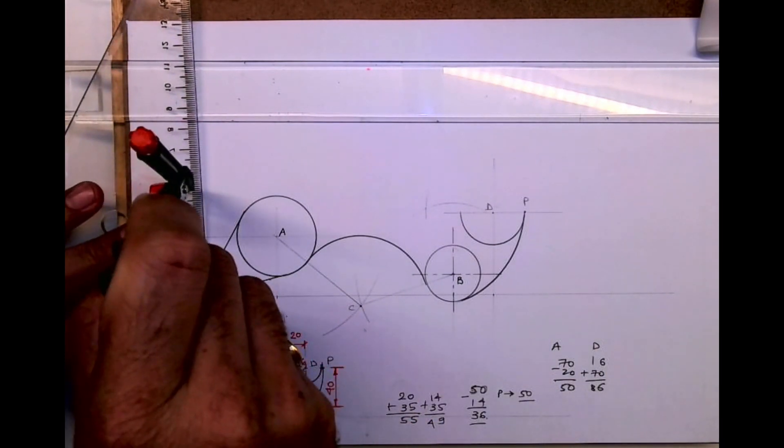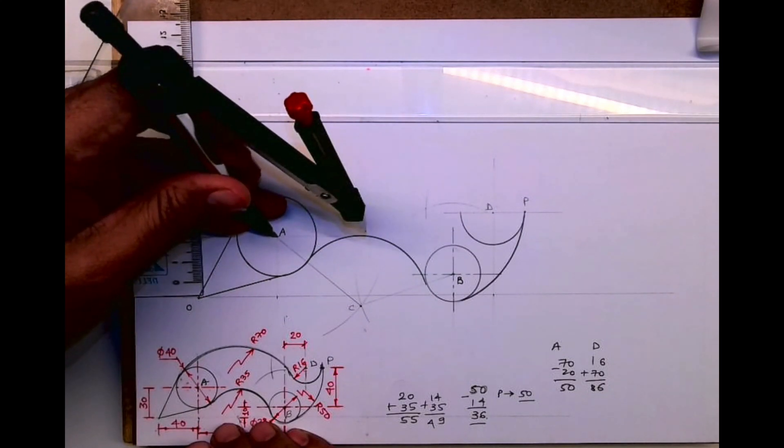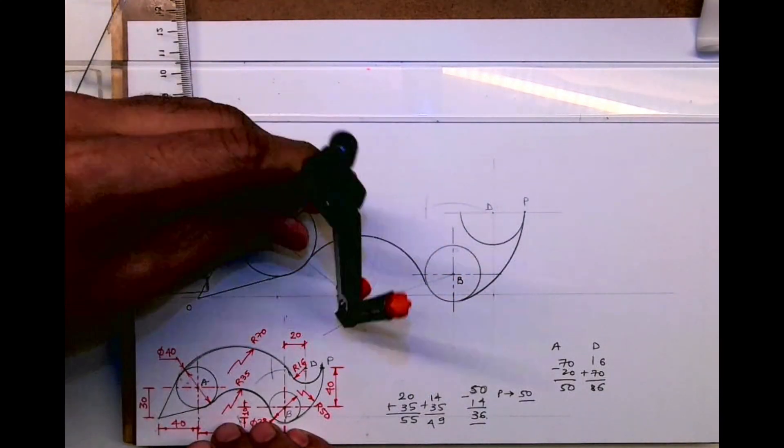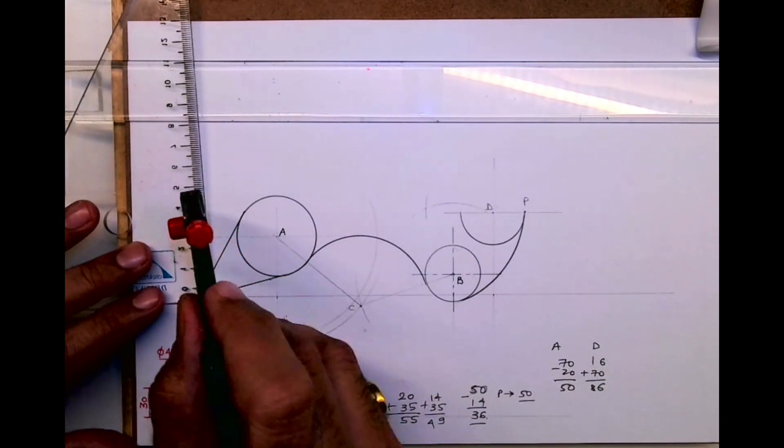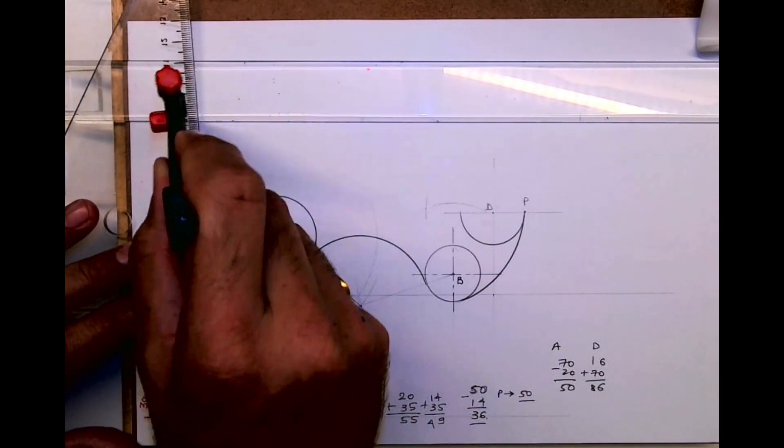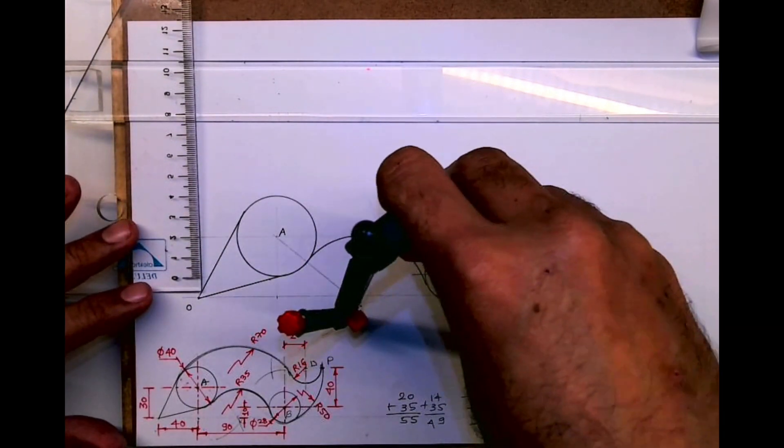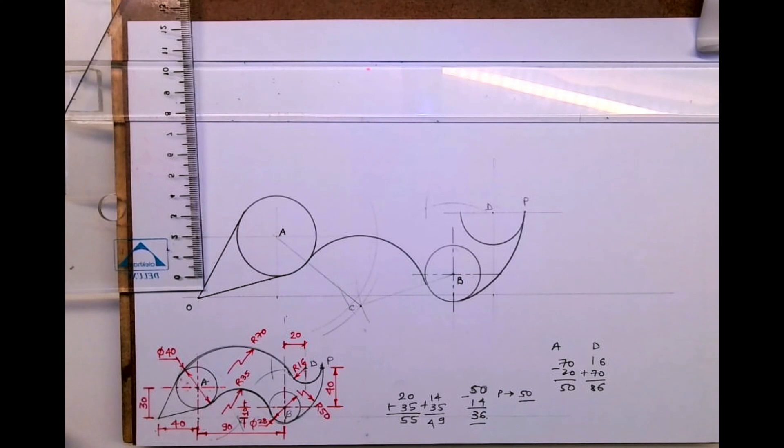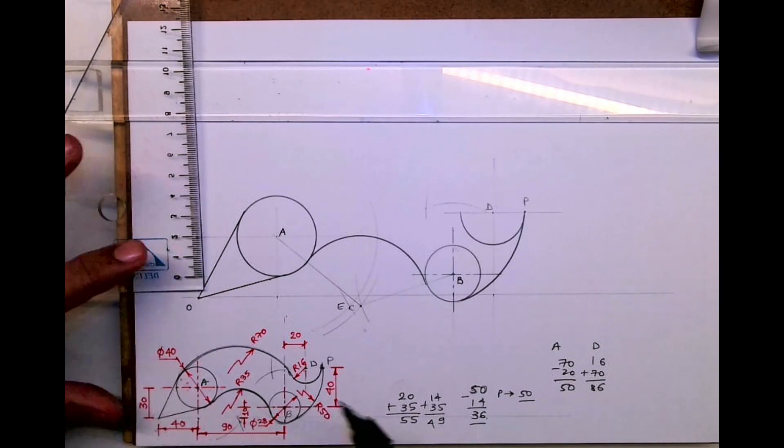So from A you cut 50, and from D you cut 86. Wherever it will intersect, that is point E. And from E we can draw radius 70.